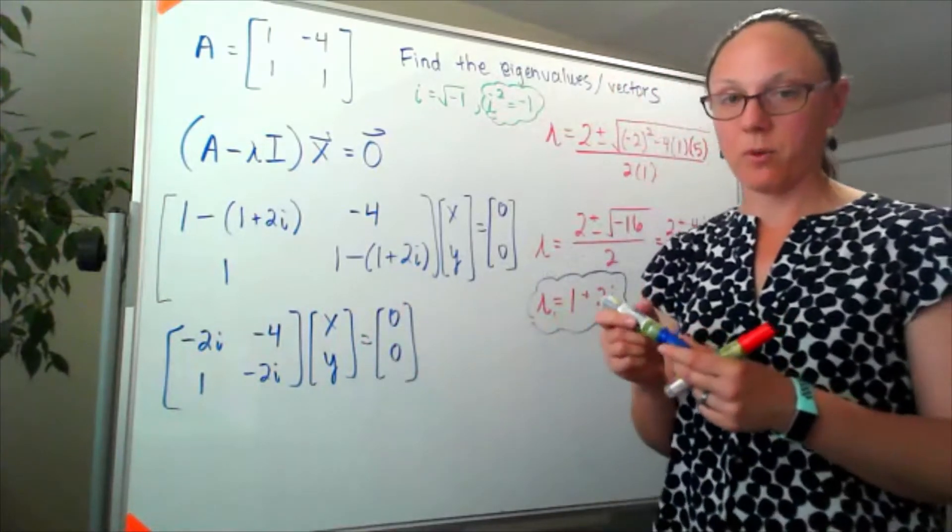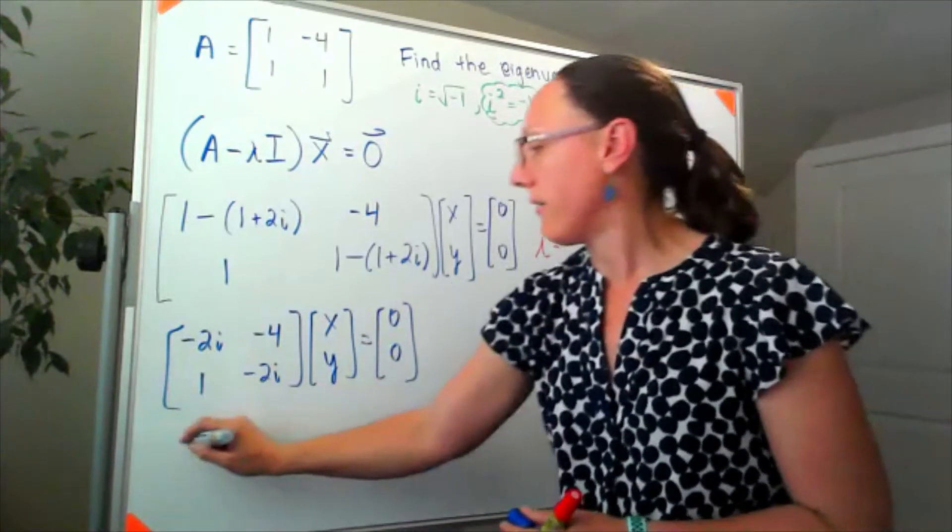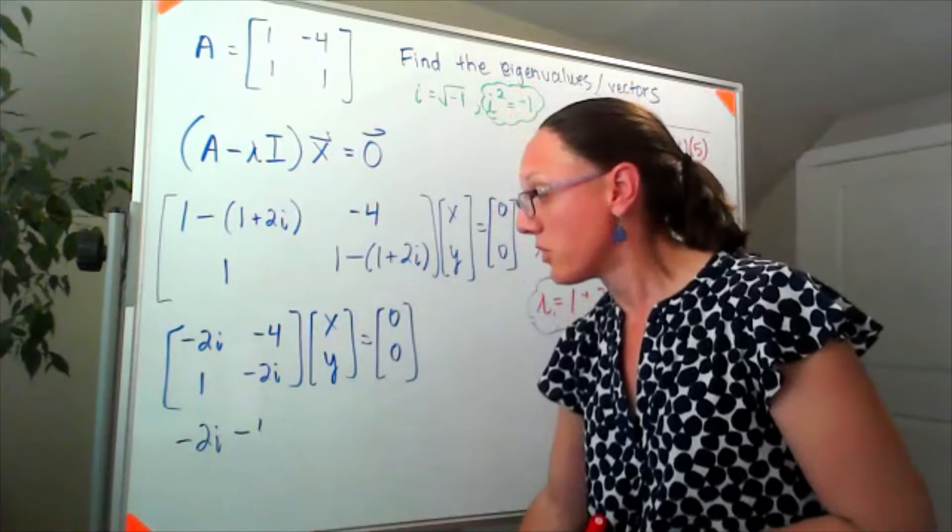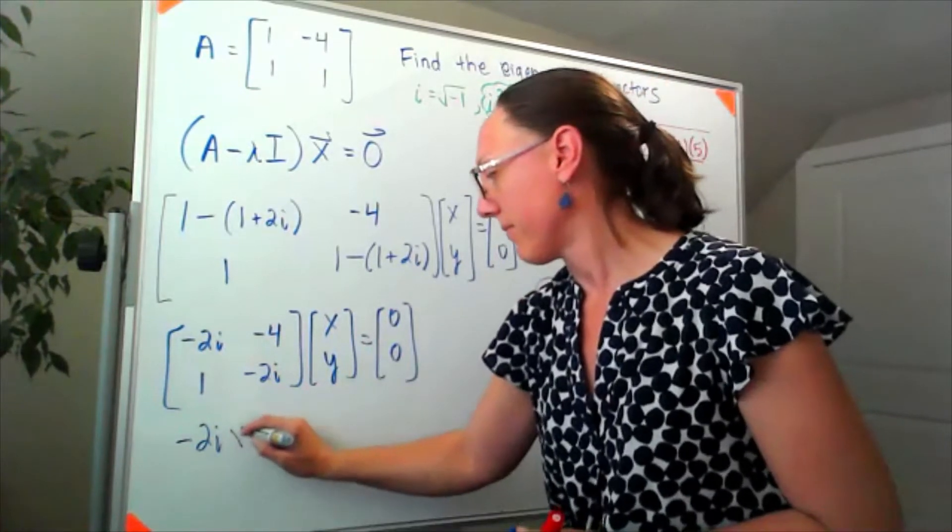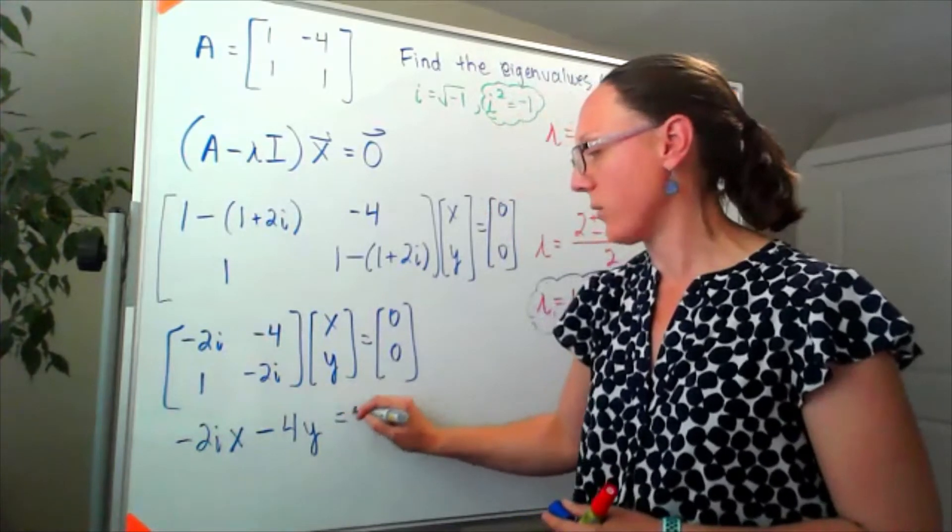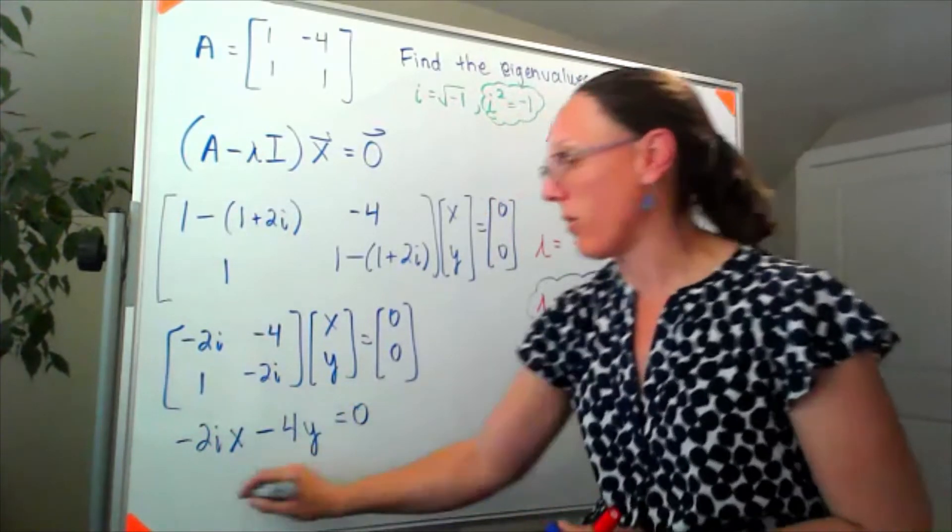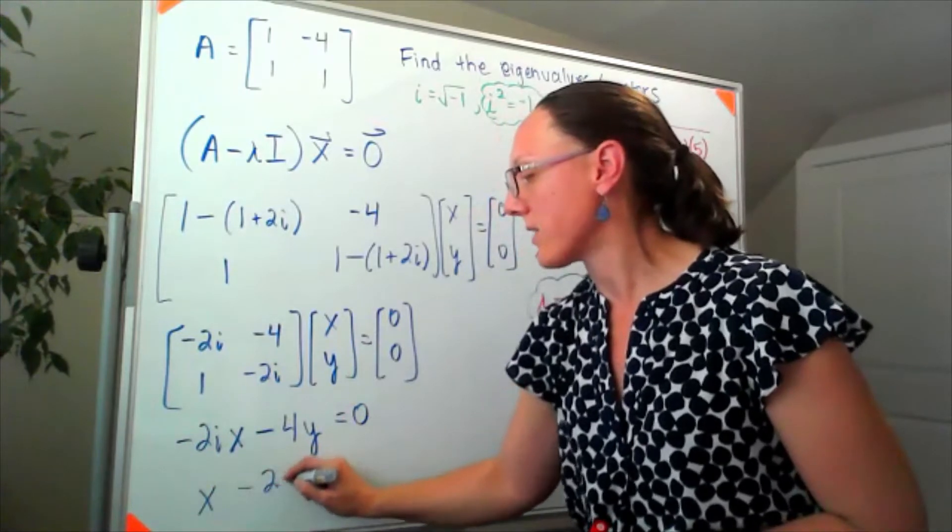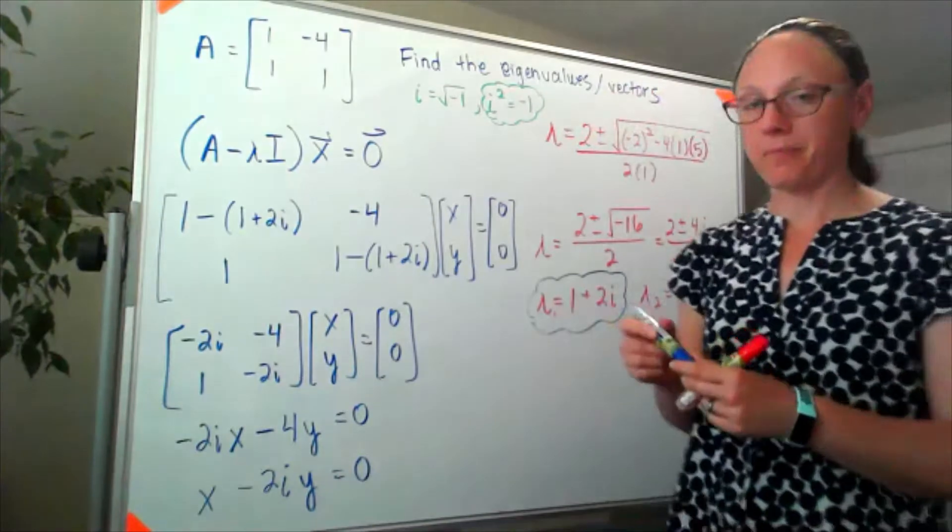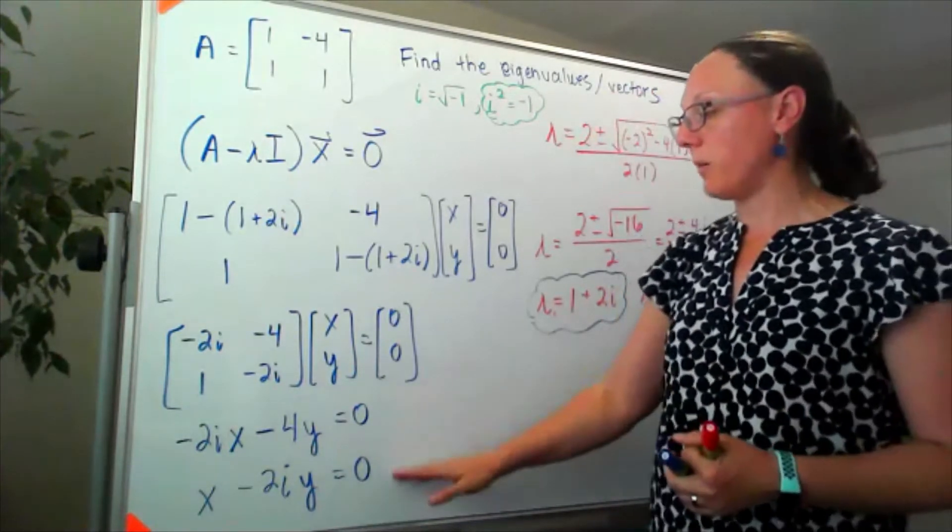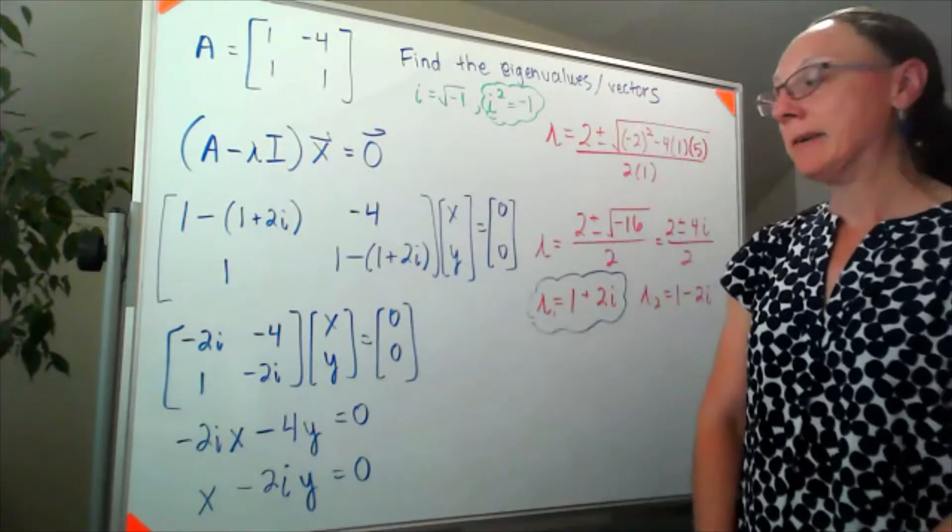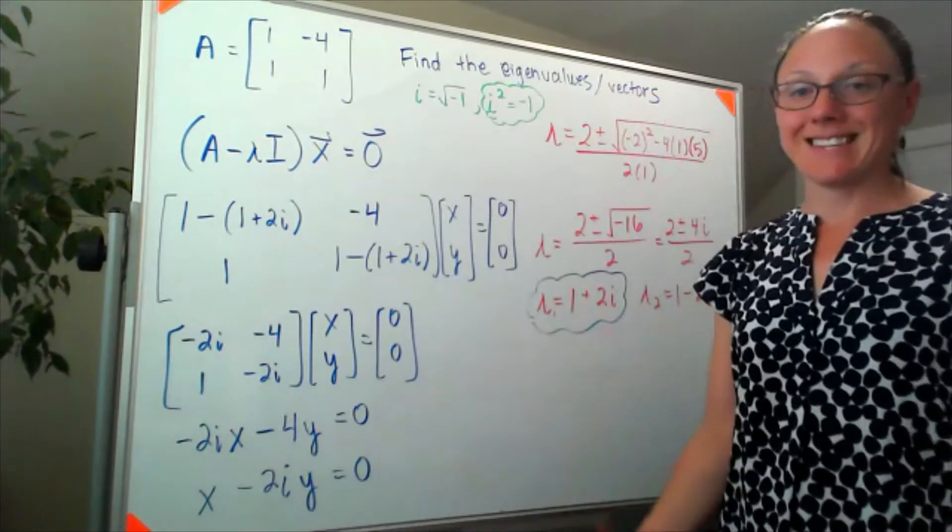If we multiply this out, I've got negative 2i x minus 4 y equals zero, and on the bottom row it ended up with x minus 2i y equals zero. Now I've mentioned before that when we write out these two equations for our eigenvectors, they should give us the same information.